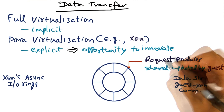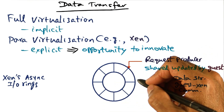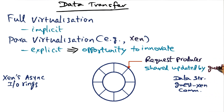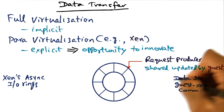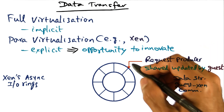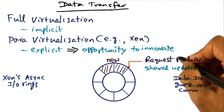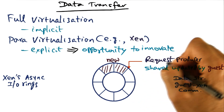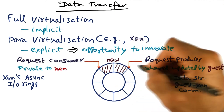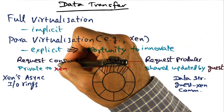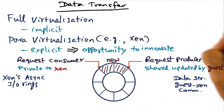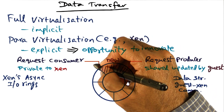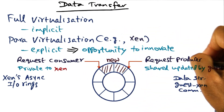The guest is the producer of requests, so it has a pointer into this data structure indicating where it has to place the next request. This pointer is modified by the guest but is readable by Xen — it's a shared pointer in that sense. For example, the guest operating system may have placed new requests and moved its pointer accordingly, indicating new requests have been placed. The consumer for the requests produced by the guest is Xen, which processes requests in the order they were produced and has its own pointer into the IO ring indicating where it is presently servicing requests from the guest.